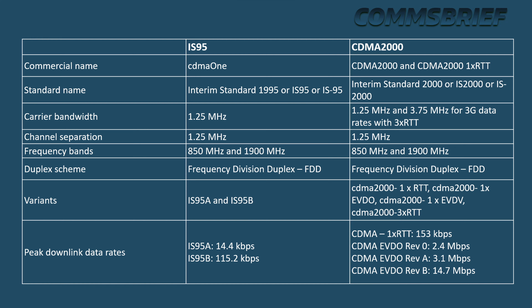With the EVDO Revision B enhancement, CDMA 2000 can support maximum data rates of up to 14.7 Mbps.